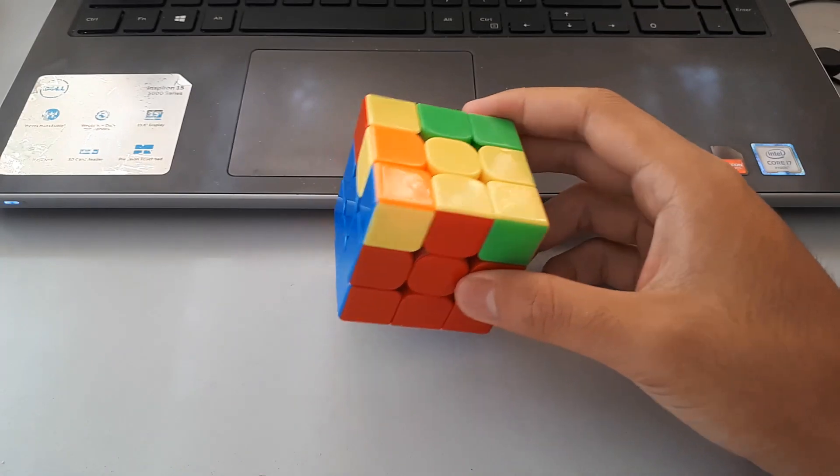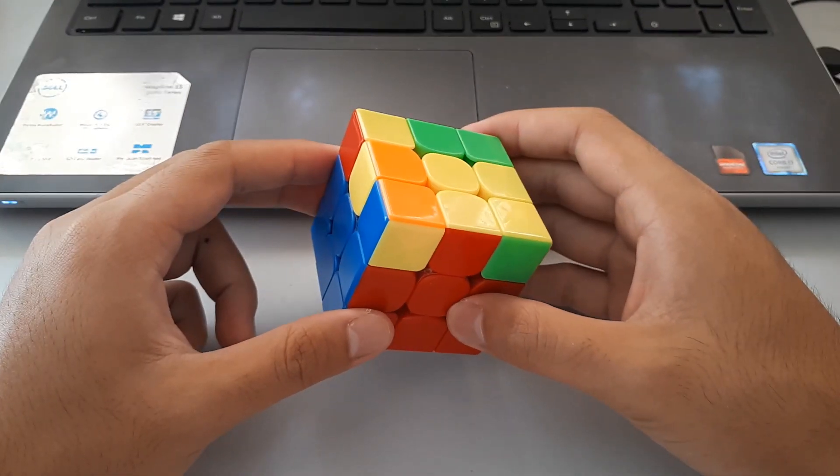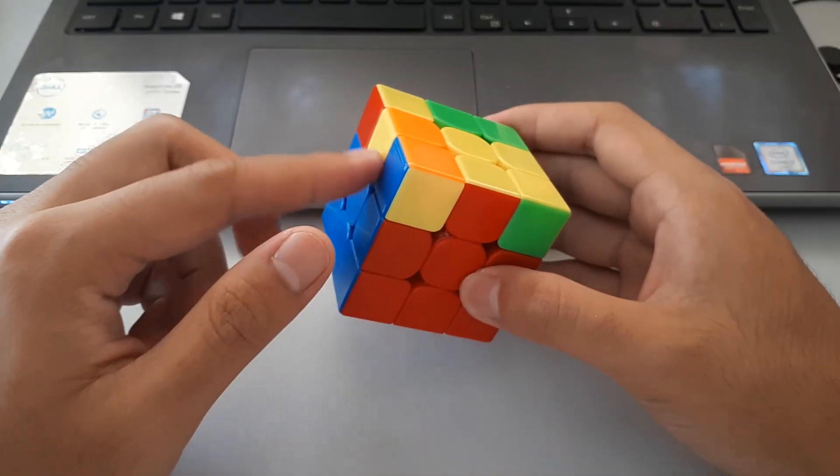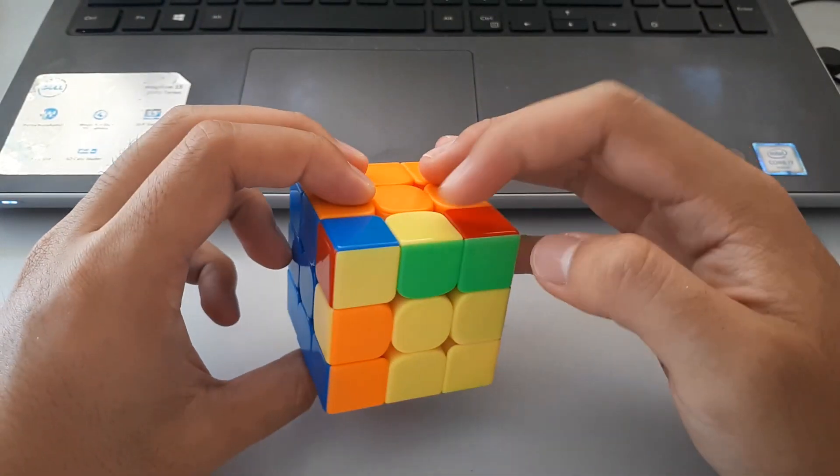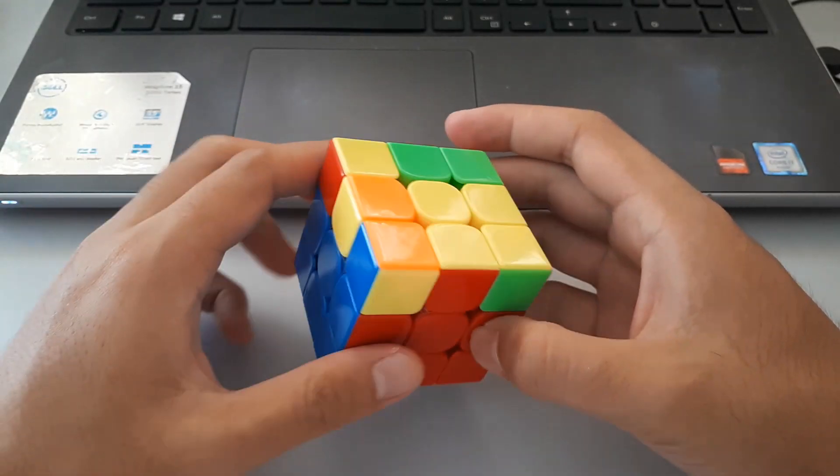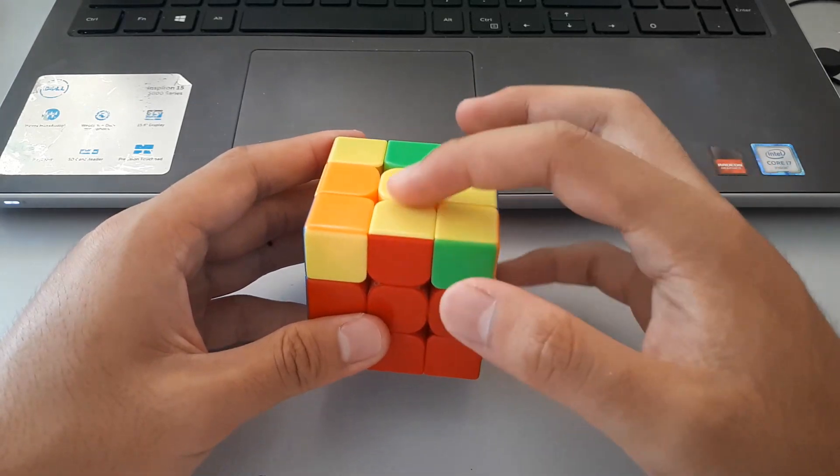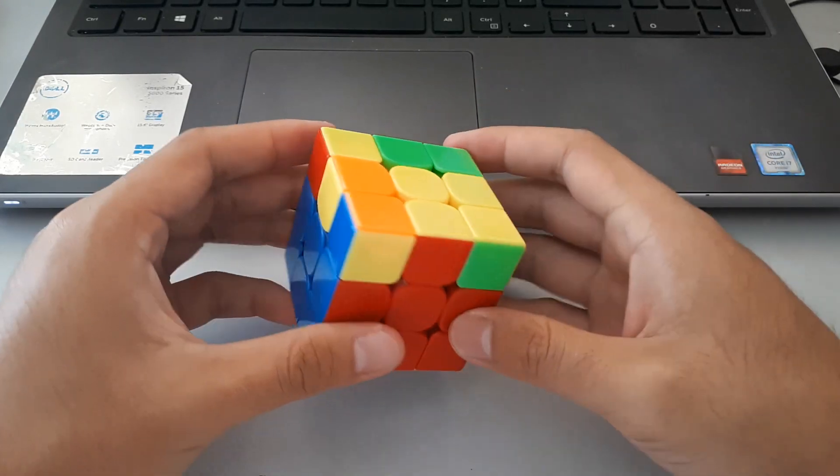The next fish shape is this one here. It's different from the other one because there's no 2x1 block here or here either. The yellow is all sort of spread out on the side. We want to hold it so that the square is at the front left, and we do this algorithm.